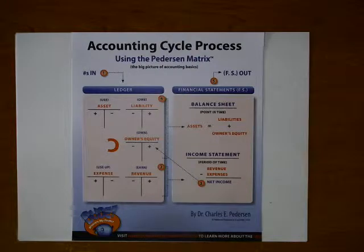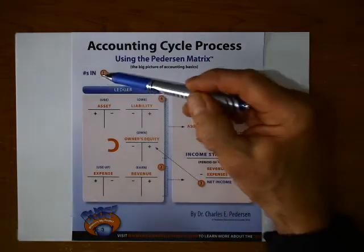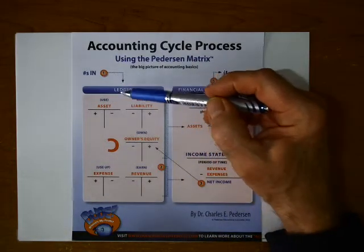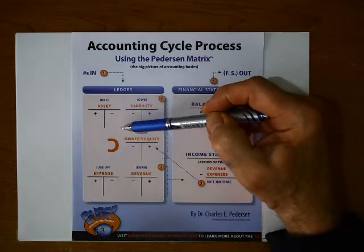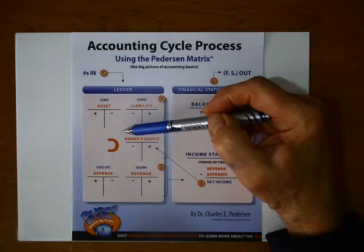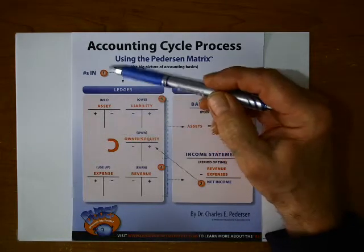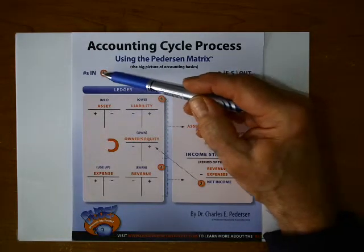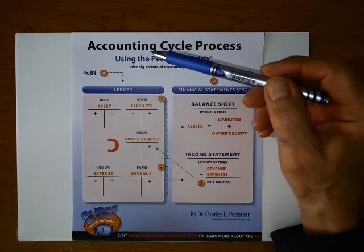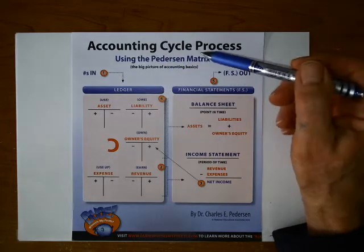The purpose of the ledger is to collect every single number. Once all the numbers are collected in the ledger and the accounts balance, that becomes step number one of the matrix process.